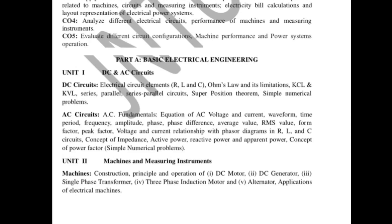Coming to Unit 2 BEEE Part A important questions and topics, let us see machines and measuring instruments. A machine is a device which converts one form of energy to another form, whereas a measuring instrument is the instrument which measures an unknown quantity.